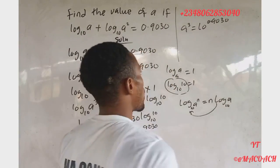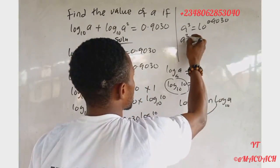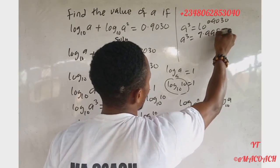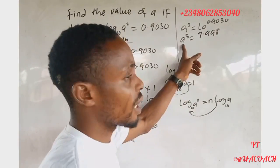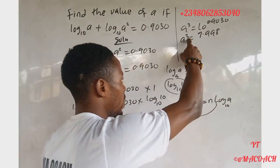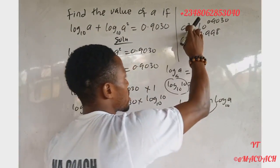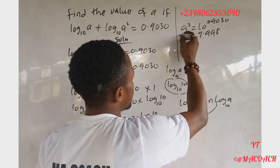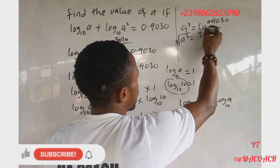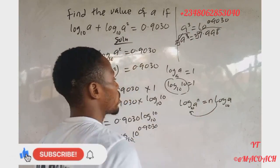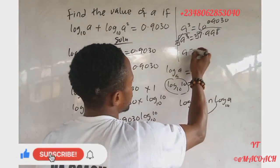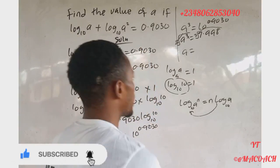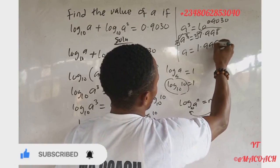When you find the antilog of 0.9030, we have: a cubed equals 7.998. Now to get the value of 'a', since this is 'a cubed', we take the cube root of both sides. The cube root cancels the power three, giving us 'a' equals the cube root of 7.998, which gives us 1.9998.